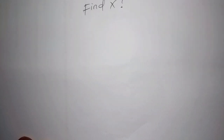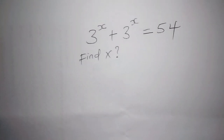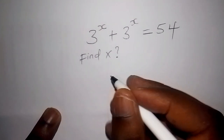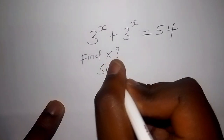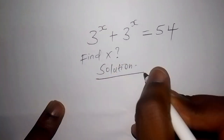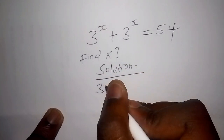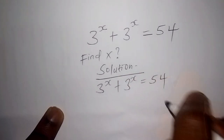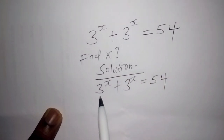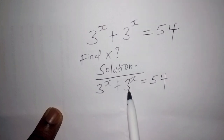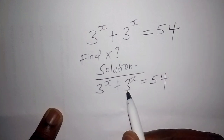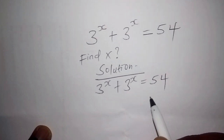The second problem is: three to the power of x plus three to the power of x equals 54. In our solution, three is the base on both terms. We need to change 54 to the base of three, but there is no number that converts directly to 54, so we need to work it out a different way.